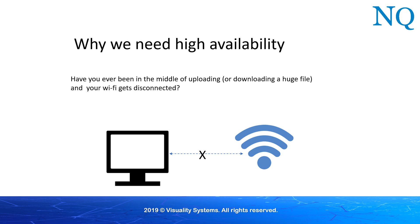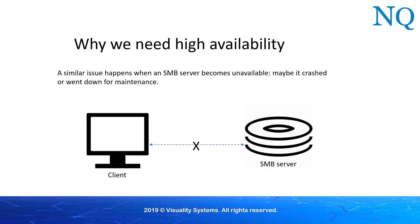A similar issue happens when an SMB server becomes unavailable. Perhaps it has crashed, or it's gone down for maintenance, or it's being replaced. It's possible to back up the server with one or more additional servers, but what if the original server goes down during a sensitive banking transaction or during some other mission-critical operation? The impact of an SMB failure may be very unpleasant indeed.